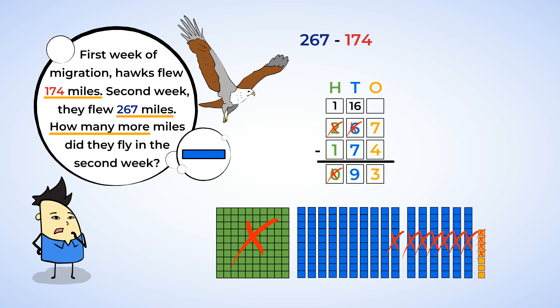267 minus 174 equals 93. We did it! Now let's go back to the problem to remember what the number 93 represents. The problem asks, how many more miles did the hawks fly the second week than the first week? Oh right! So the hawks traveled 93 more miles in the second week. Nice work!